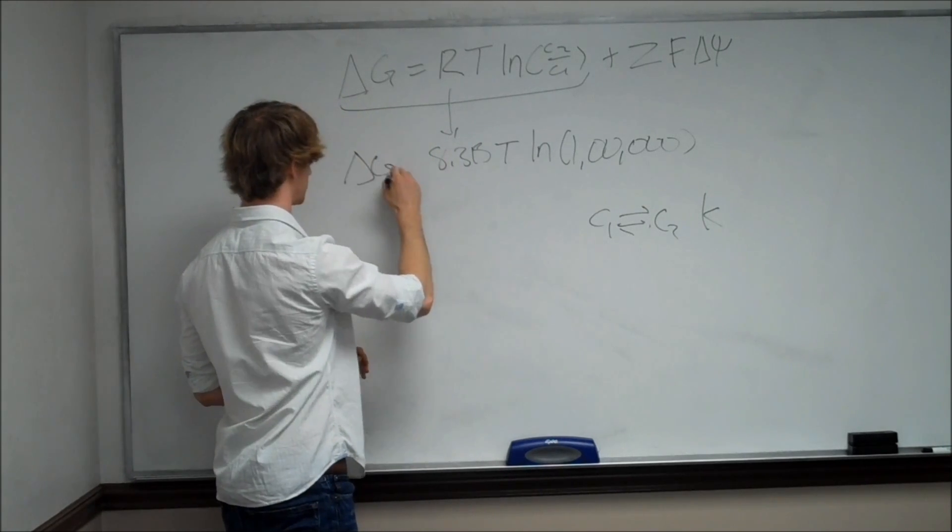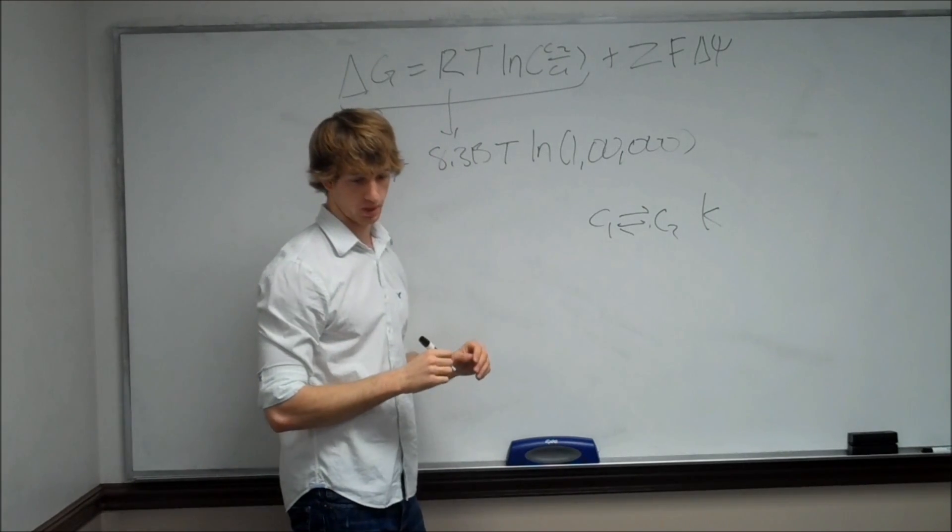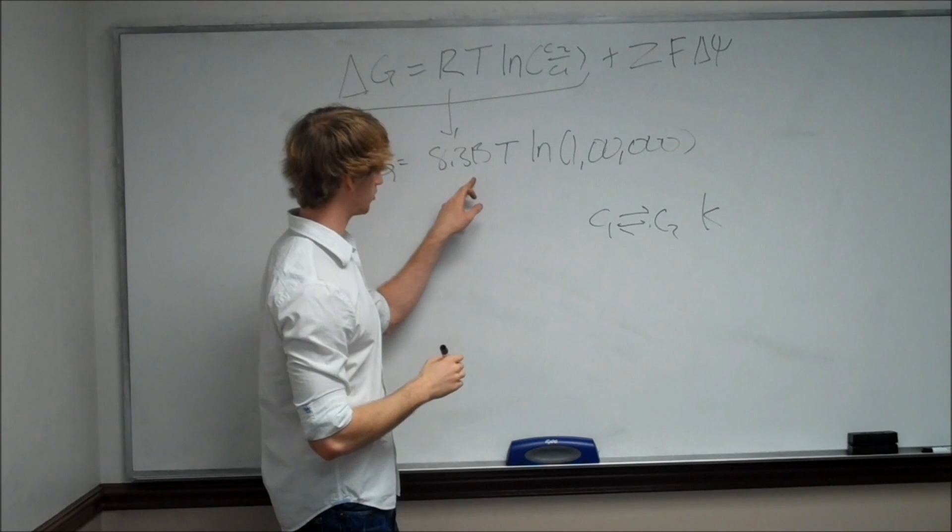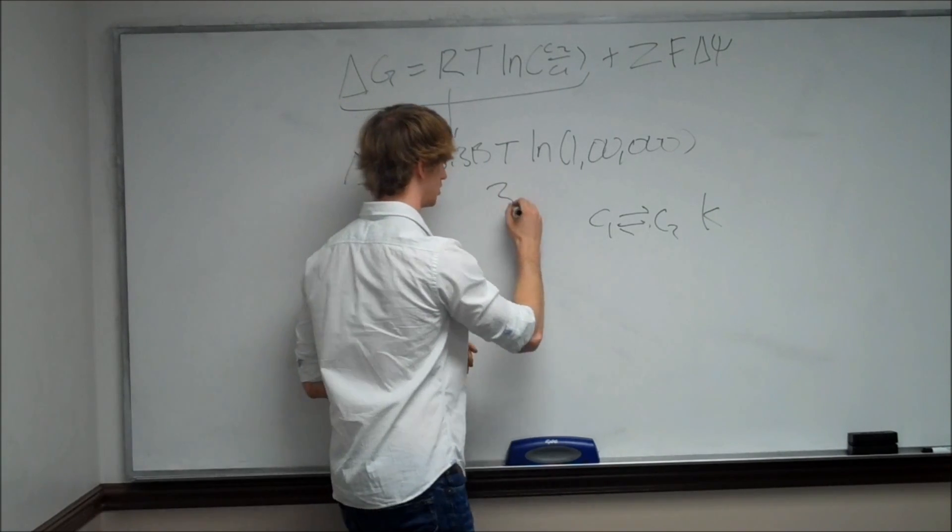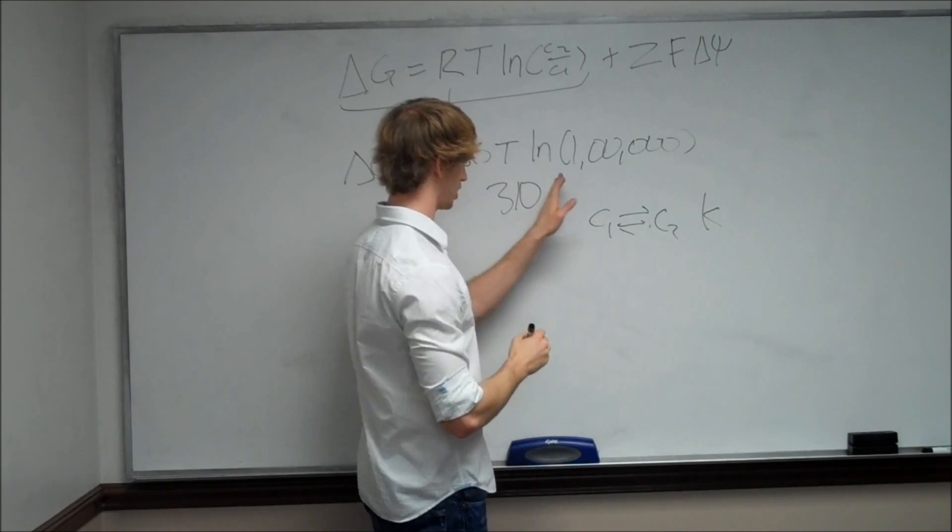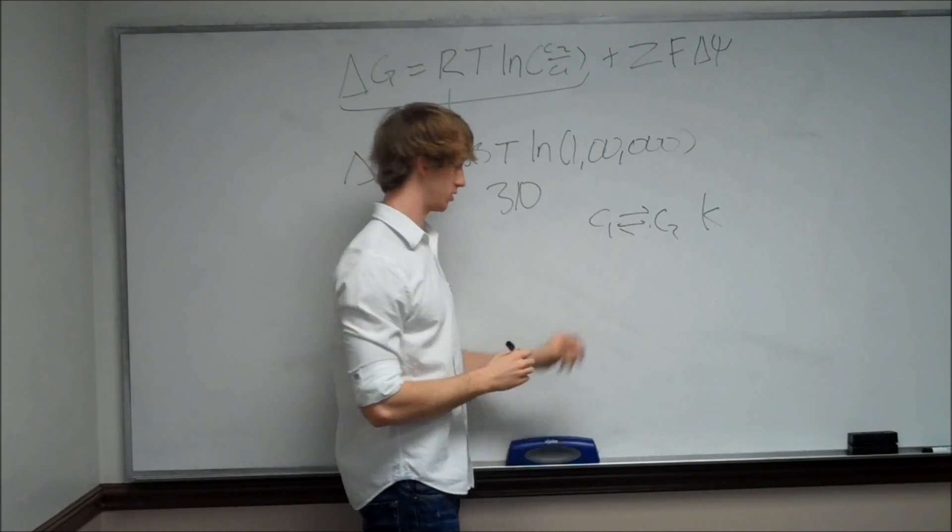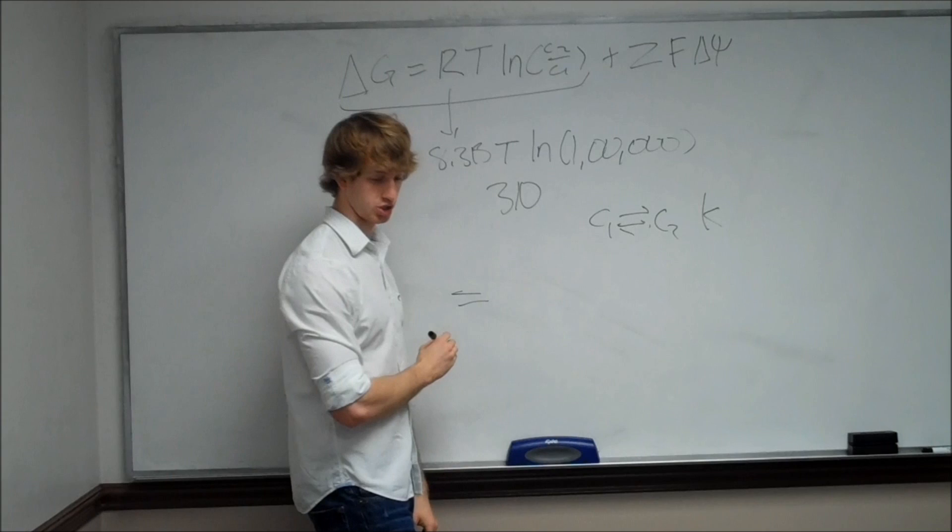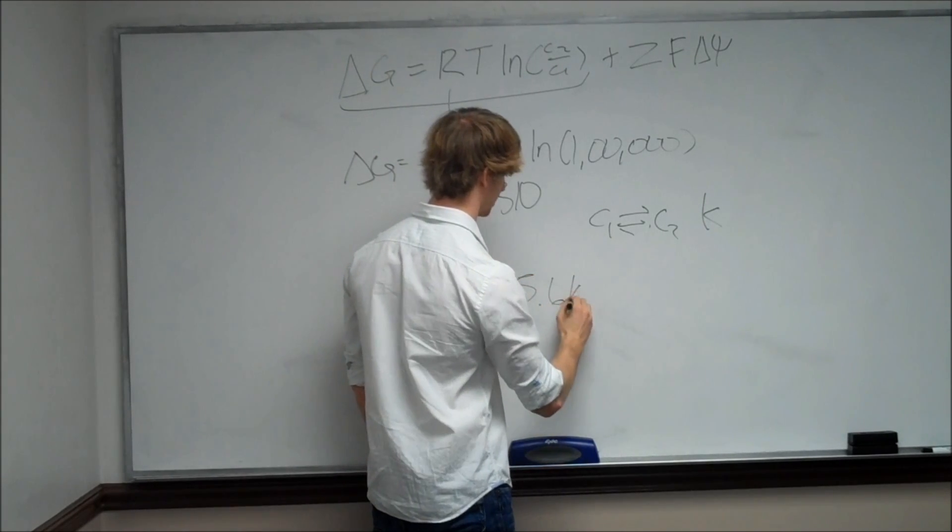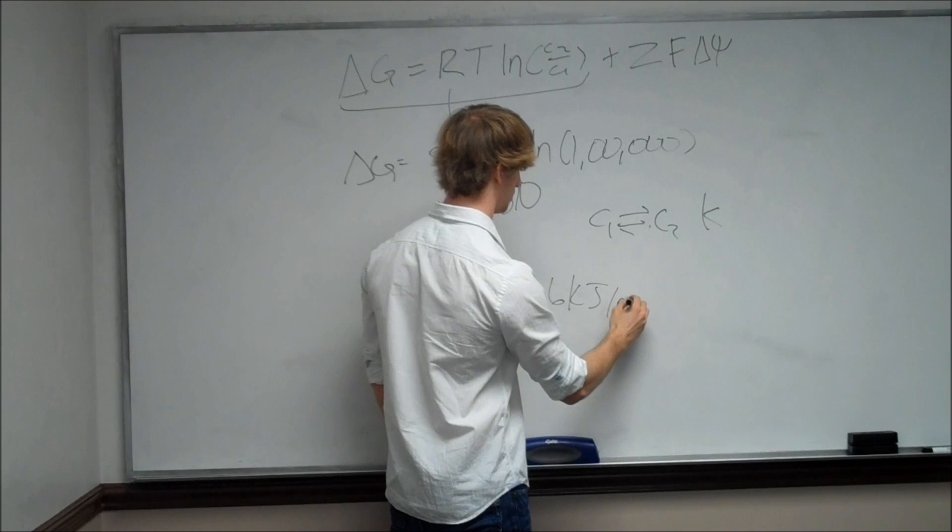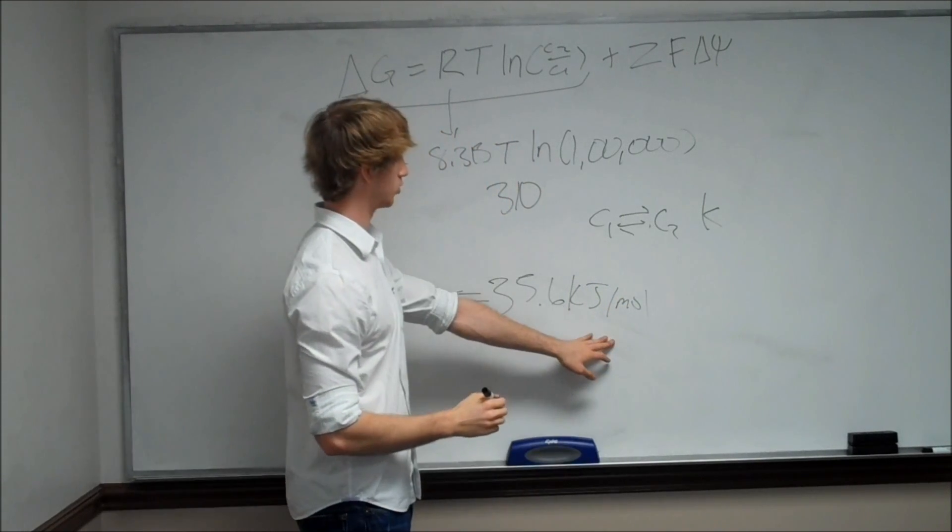So to solve delta G for this first part, we just take R, which is 8.315, multiplied by the temperature it gives us, which is 310 Kelvin, multiplied by the natural log of one million. And if you just plug it into your calculator, you should get something about 35.6 kilojoules per mole. And these are the units that it works out to.